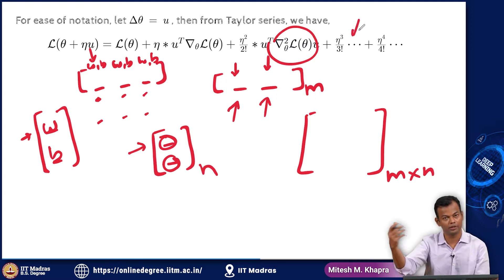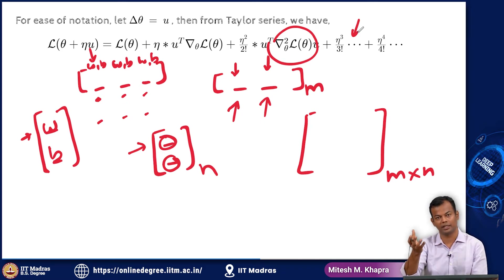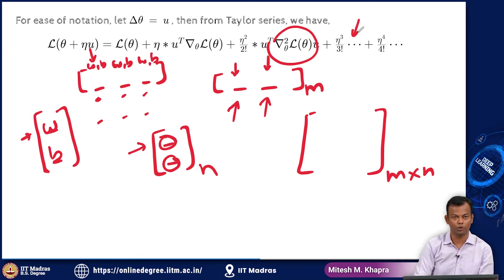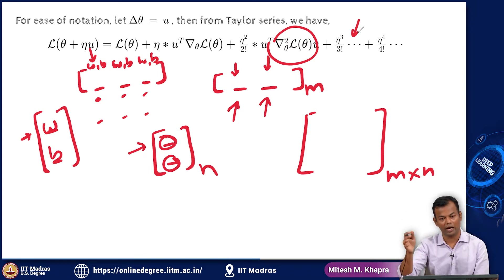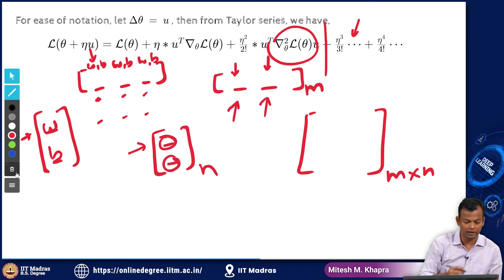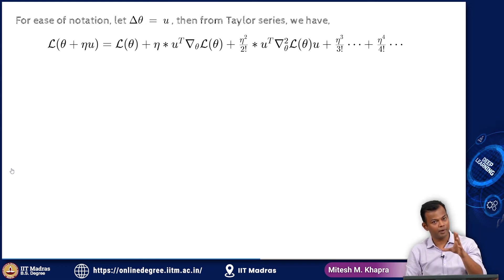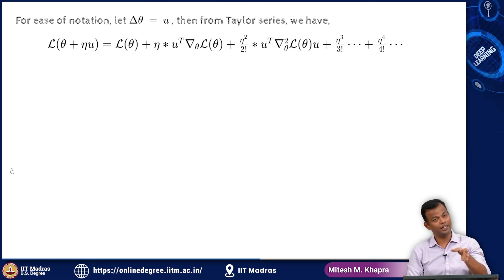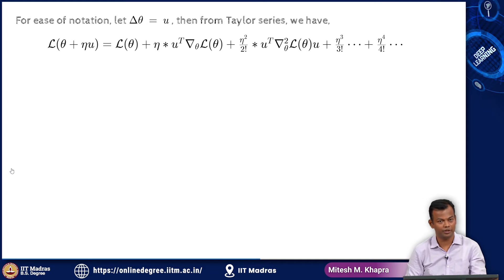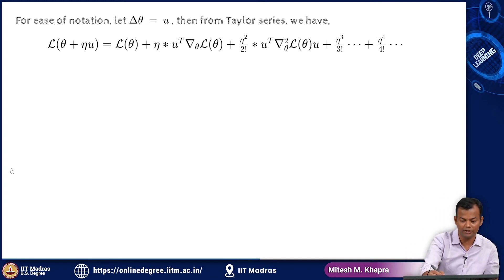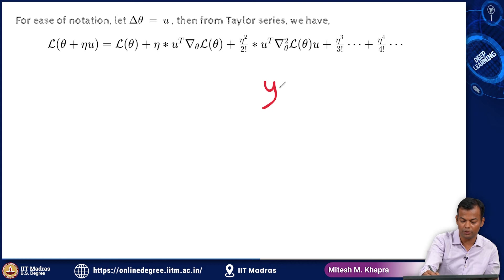Similarly, there would be a third order derivative — a matrix of which you take the derivative with respect to a vector — but I will not go that far. So to summarize: derivatives, partial derivatives, collection of partial derivatives is the gradient, the gradient of the gradient is the Hessian.